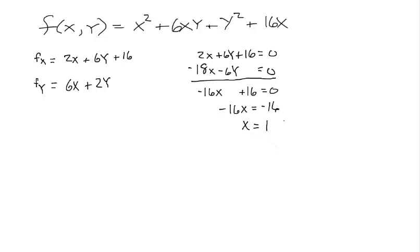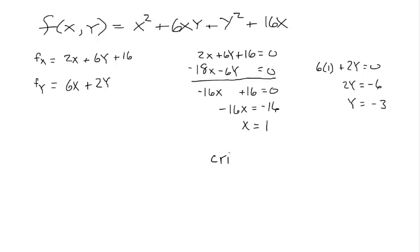Now that we know x = 1, we plug it into 6x + 2y = 0. So 6(1) + 2y = 0, which gives 2y = −6, and y = −3. Our critical value is at (1, −3).